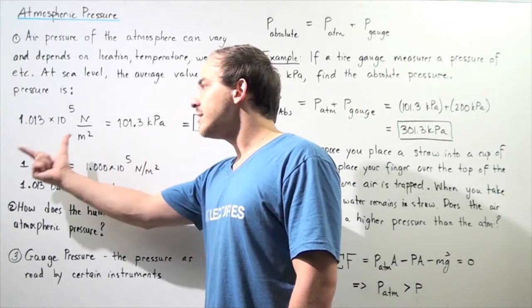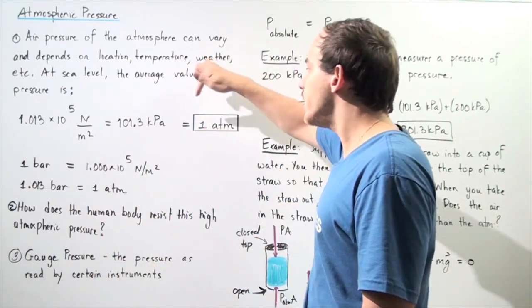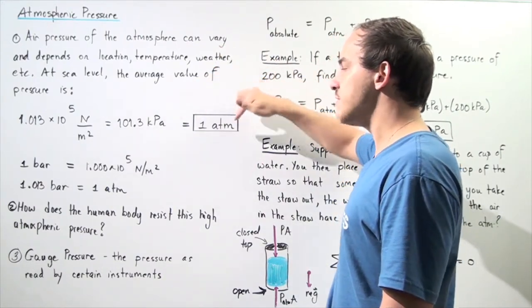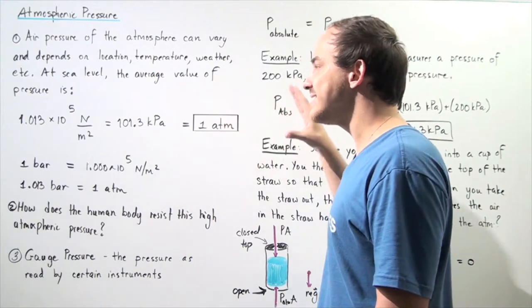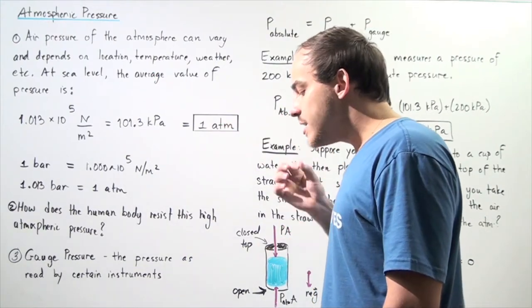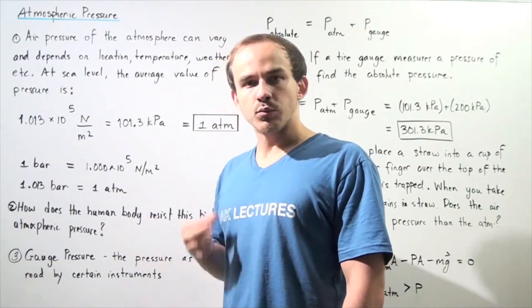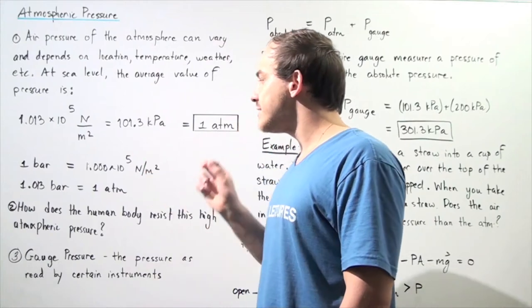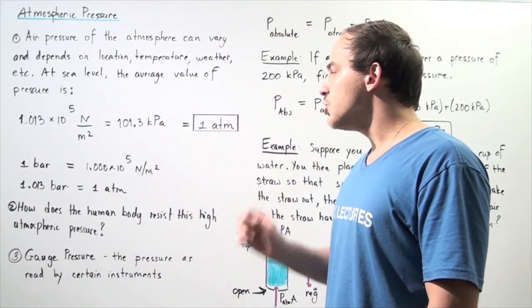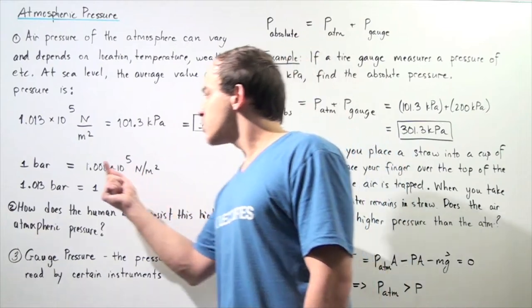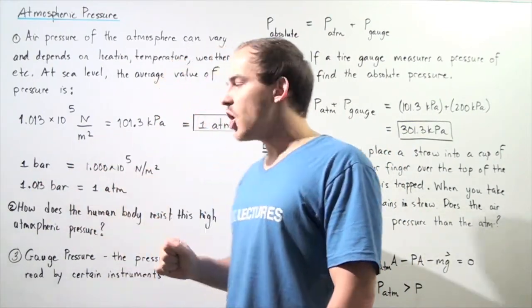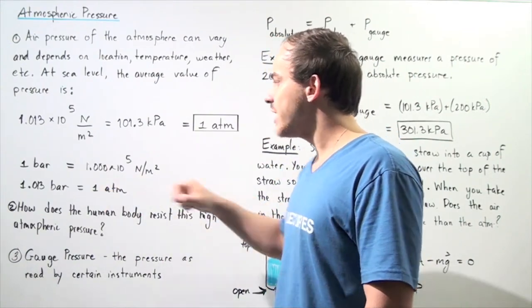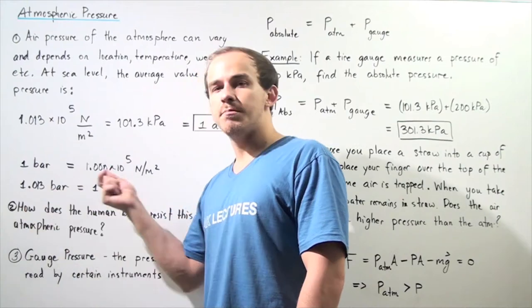These two quantities are both defined as 1 atm. So 1 atm of pressure is simply 1 atmosphere pressure, which is the pressure at sea level. Another type of unit of measurement that we should be aware of is bar. One bar equals 1.000 times 10 to the 5 newton per meter squared. So we see that 1 bar is slightly below 1 atmospheric pressure. In fact, 1 atmospheric pressure equals 1.013 bar.